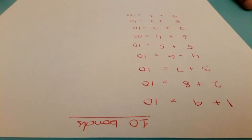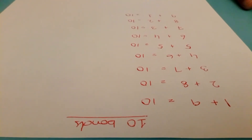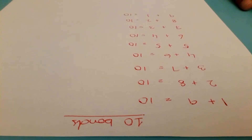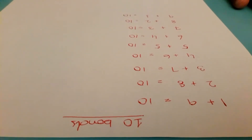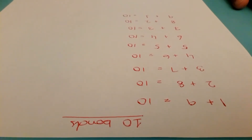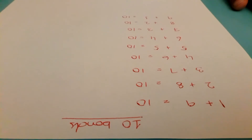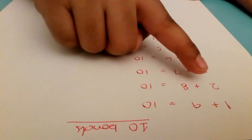Today I am going to tell you about 10 bonds, which are very useful to add numbers like 8 plus 8, which we cannot add with our 5 bonds. So these are the 10 bonds.